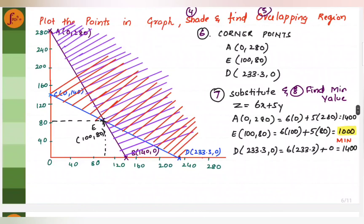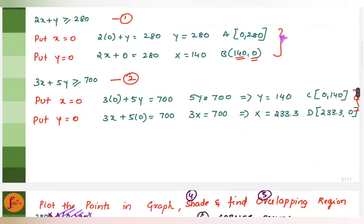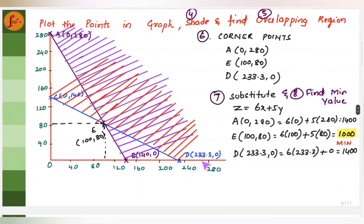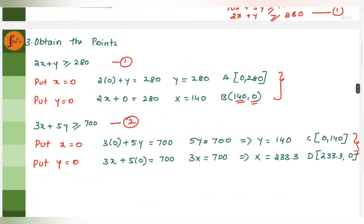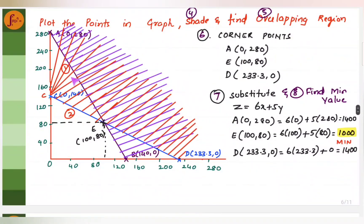Now we plot the graph. Choose a scale that allows all points — up to 280 — to be plotted. Plot constraint 1 using points A and B, and constraint 2 using points C and D. Since both constraints are greater than or equal to, the shading is above the line, away from the origin. We shade both constraints and identify the overlapping region — the region where both shaded areas meet.